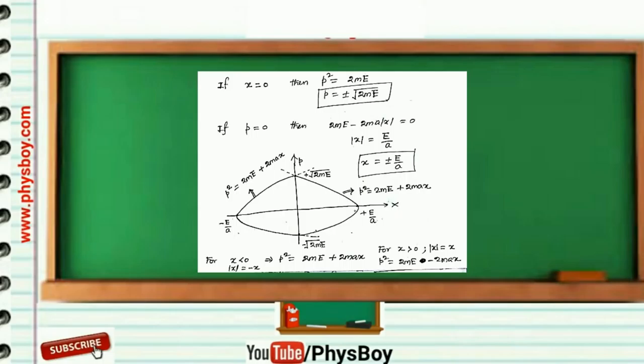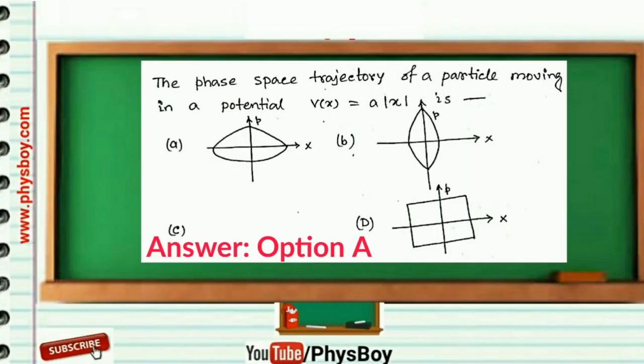And for x > 0, |x| = x, so p² = 2mE - 2max. This is the right side parabola of the above figure.